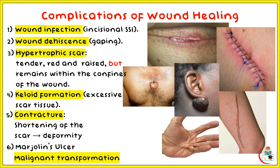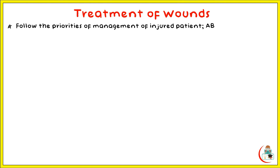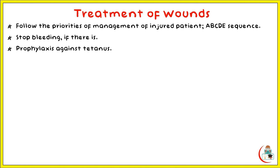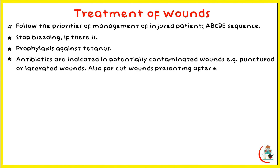Treatment of wounds includes the following steps. Follow the priorities of management of the injured patient: the A, B, C, D, E sequence — A for airway, B for breathing, and C for circulation. Stop the bleeding and refer to the hemorrhage video. Provide prophylaxis against tetanus. Antibiotics are indicated in potentially contaminated wounds like punctured or lacerated wounds, and also for cut wounds presenting after six hours.